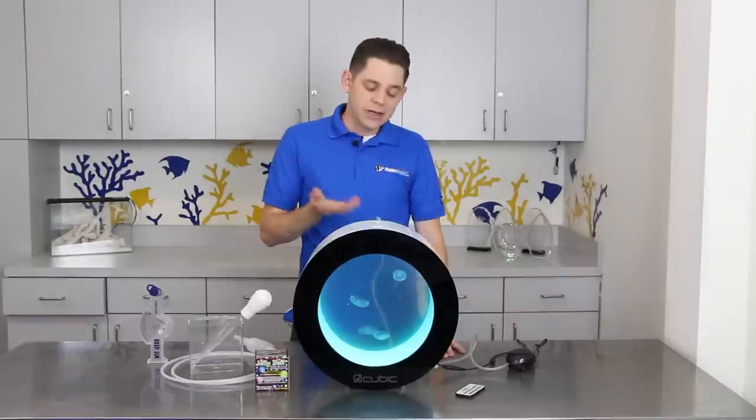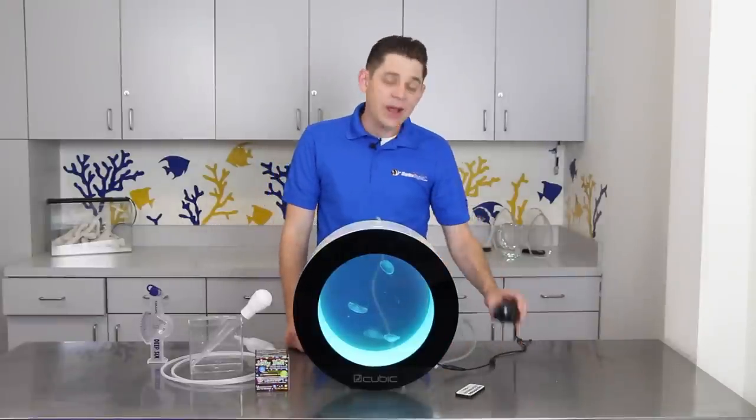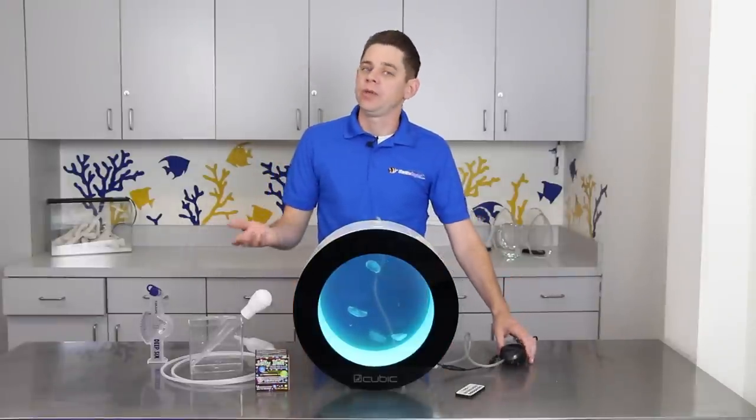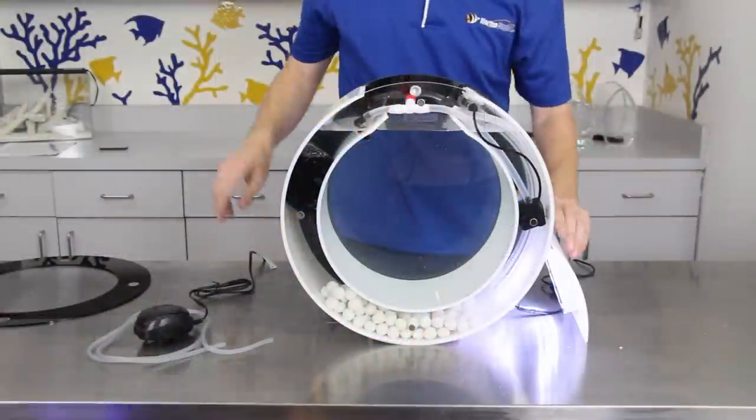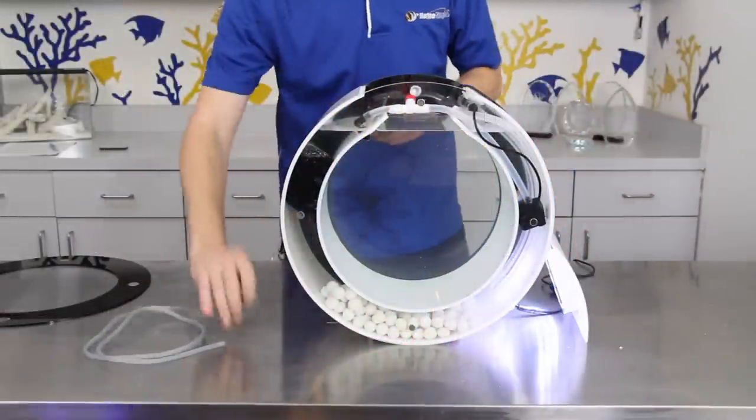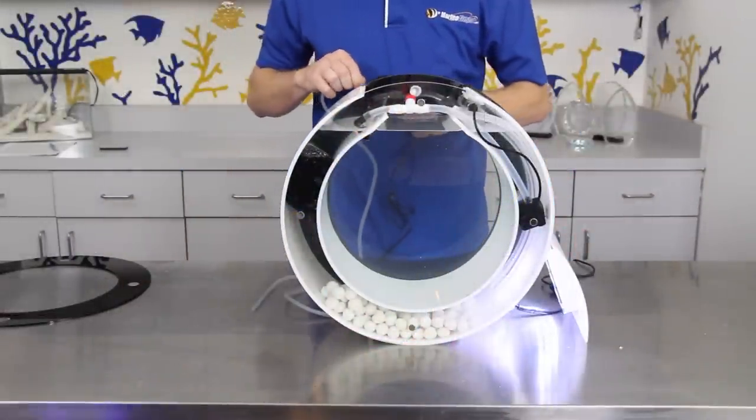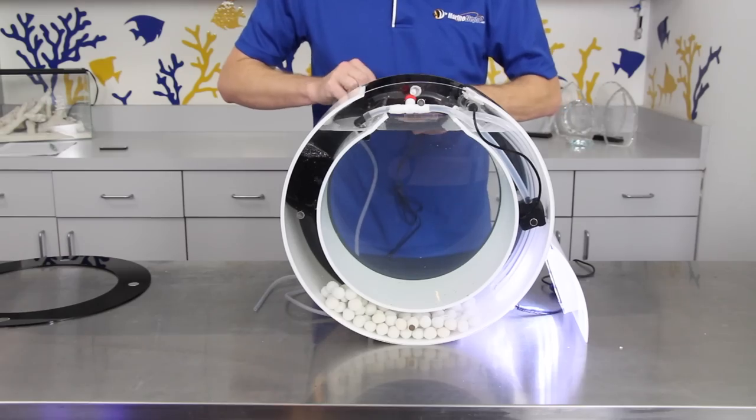Now since the tank doesn't really allow for ample surface agitation it's a really good idea to add an air pump to help keep the pH stable. You do not want to use an air stone, just the airline, and keep the large bubbles away from the pump since micro bubbles can be problematic for your jellies.